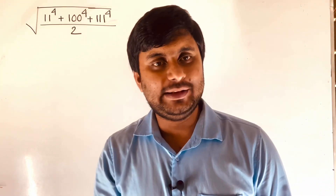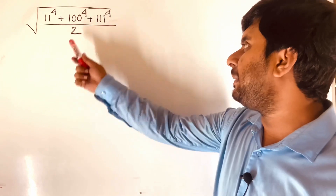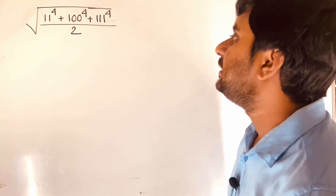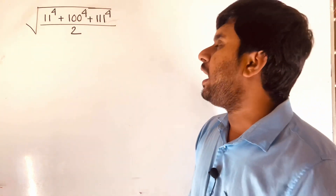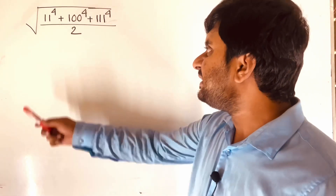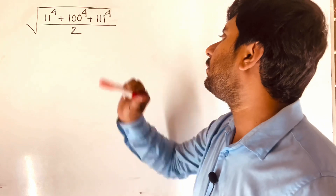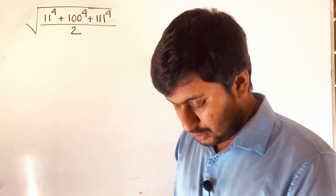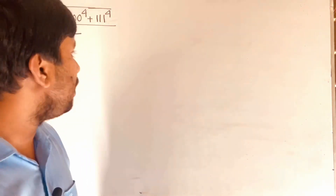Hello everyone, I hope everybody is well. Today we are solving this math olympiad question — how to solve this radical math question. It is a Japanese math olympiad question, and we have solved this question without a calculator. The question is: square root of (11 to the power 4 plus 100 to the power 4 plus 111 to the power 4) over 2.